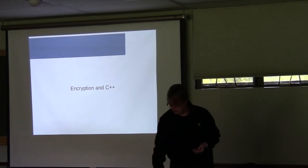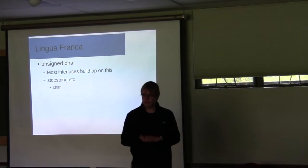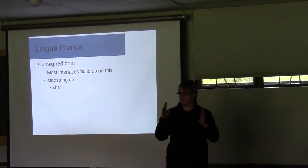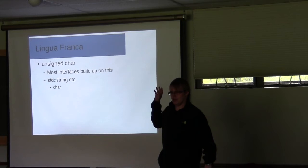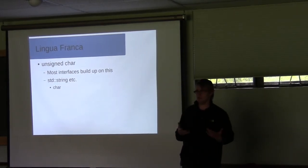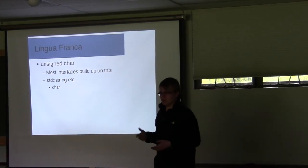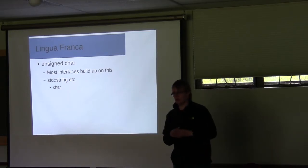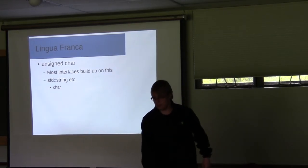This brings me to encryption and C++, which is actually the topic of this talk. The first thing I noticed is that everything that does encryption is based on unsigned char. Most interfaces I've seen have this unsigned char interface with very basic signatures — you pass an unsigned char pointer and the length of the area you want to encrypt. Most of our types like std::string are char, and you have to do a lot of casting or copy data into a vector of unsigned char.